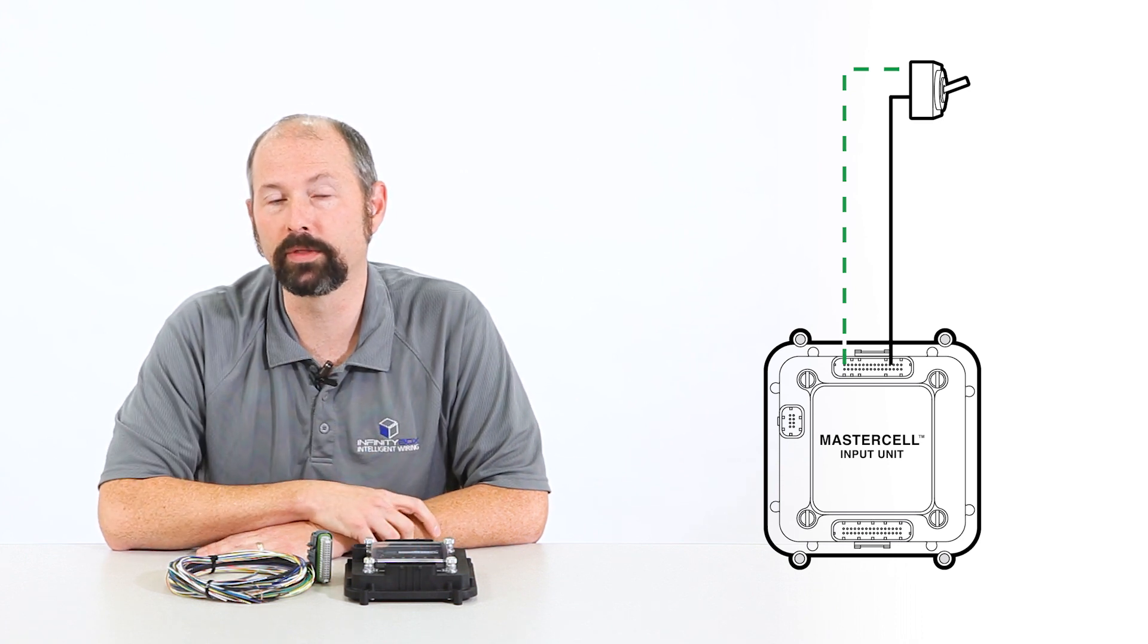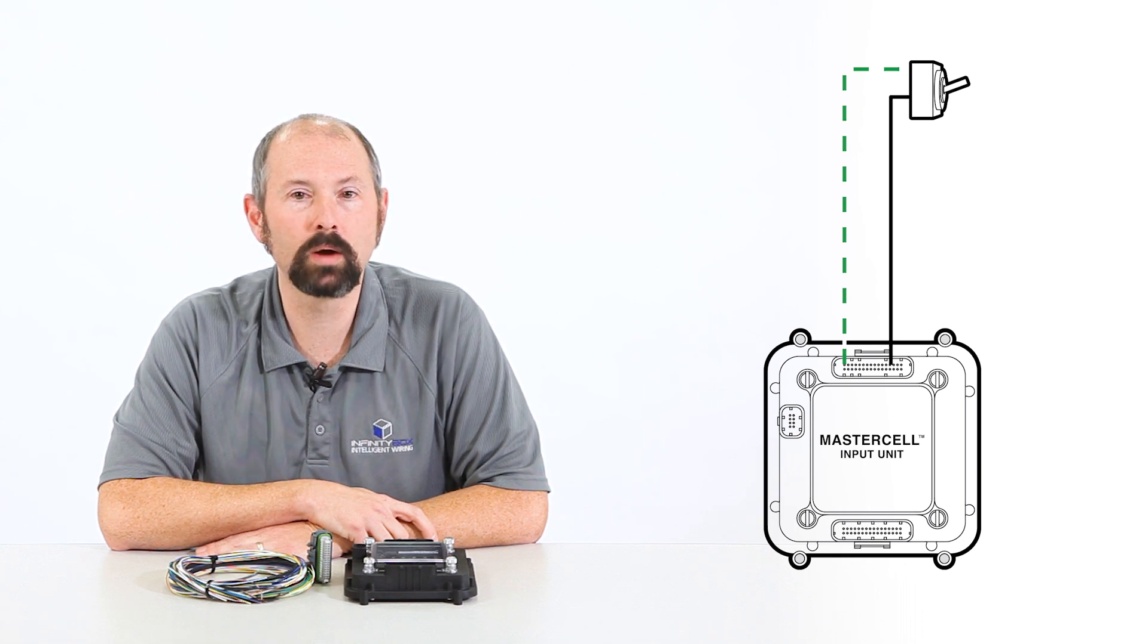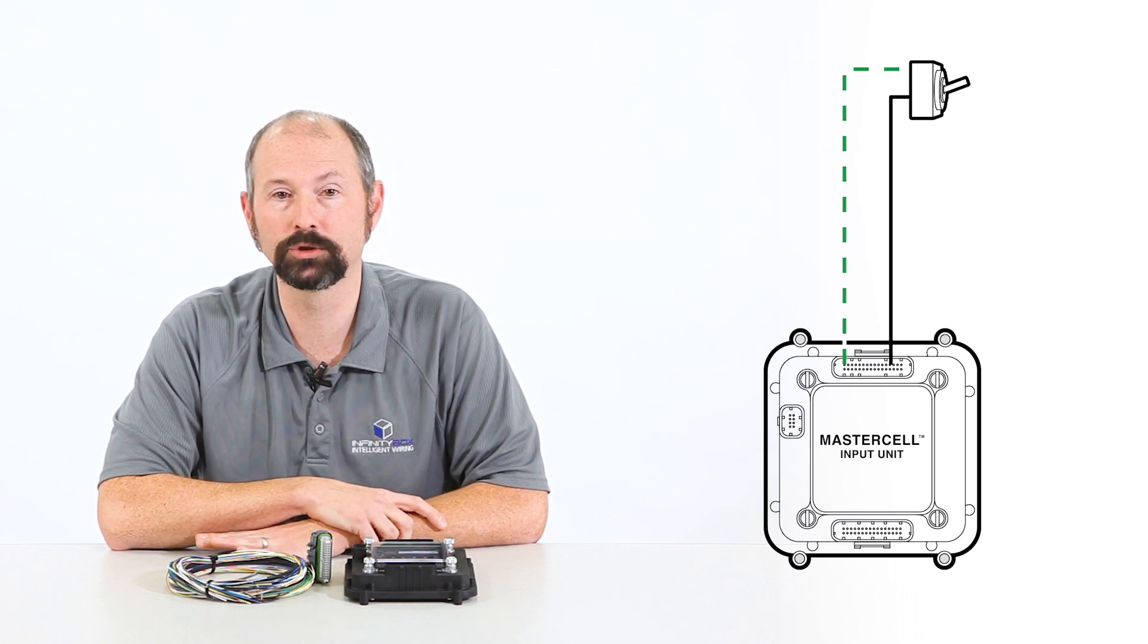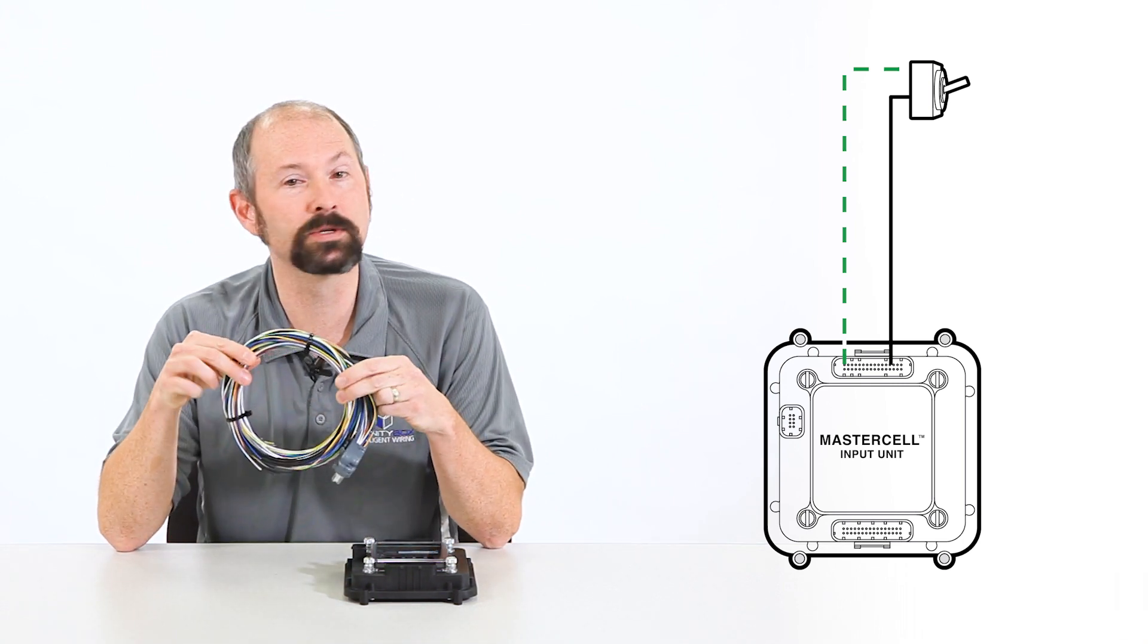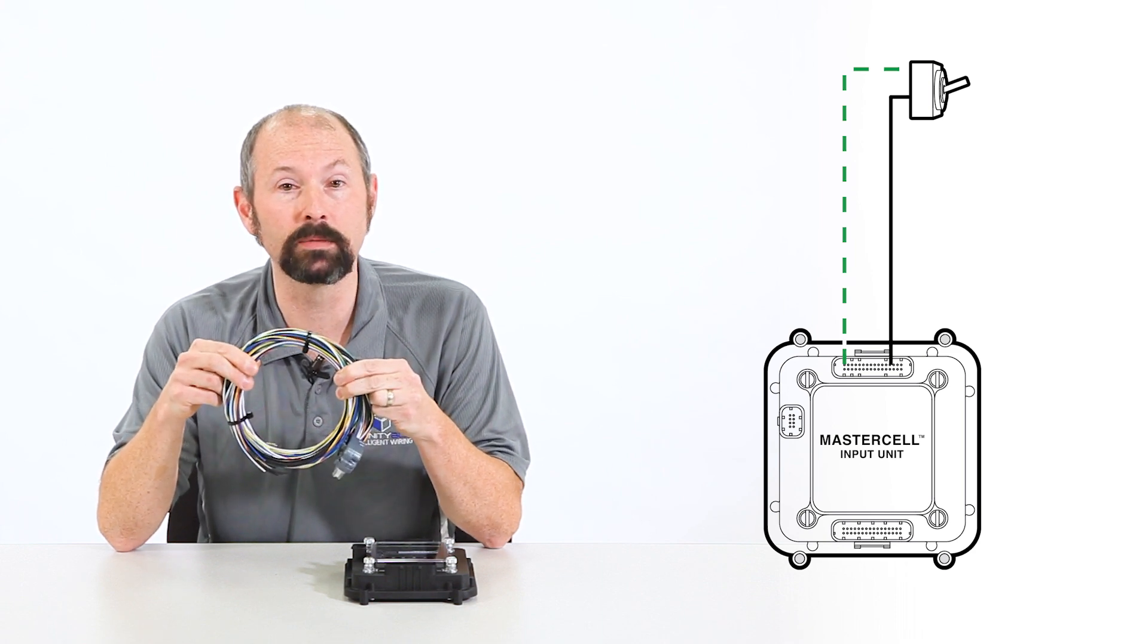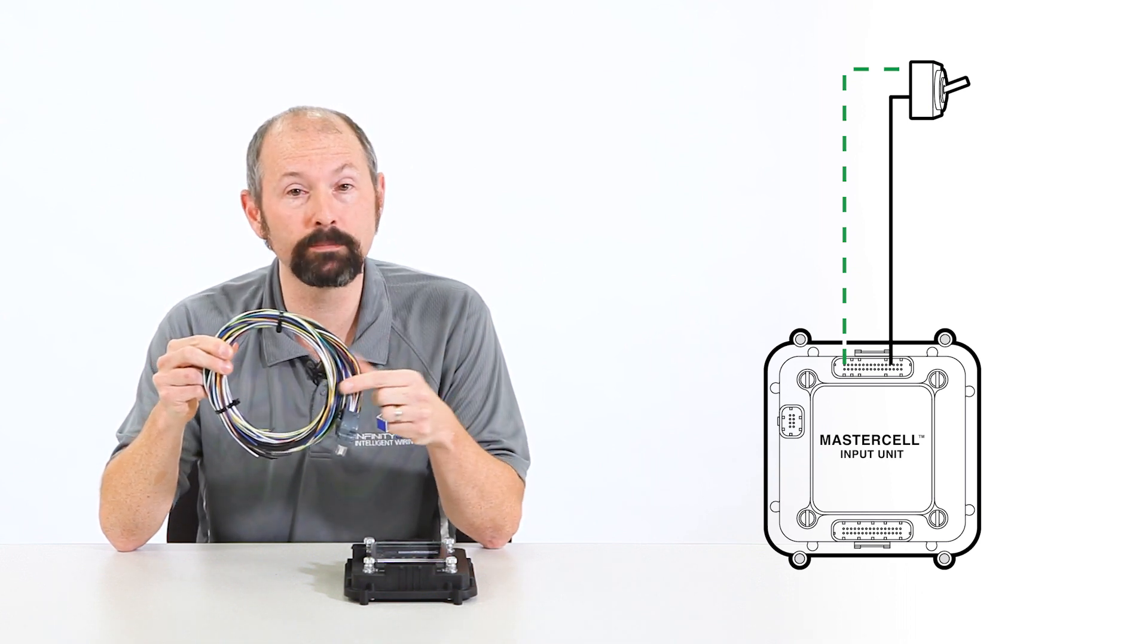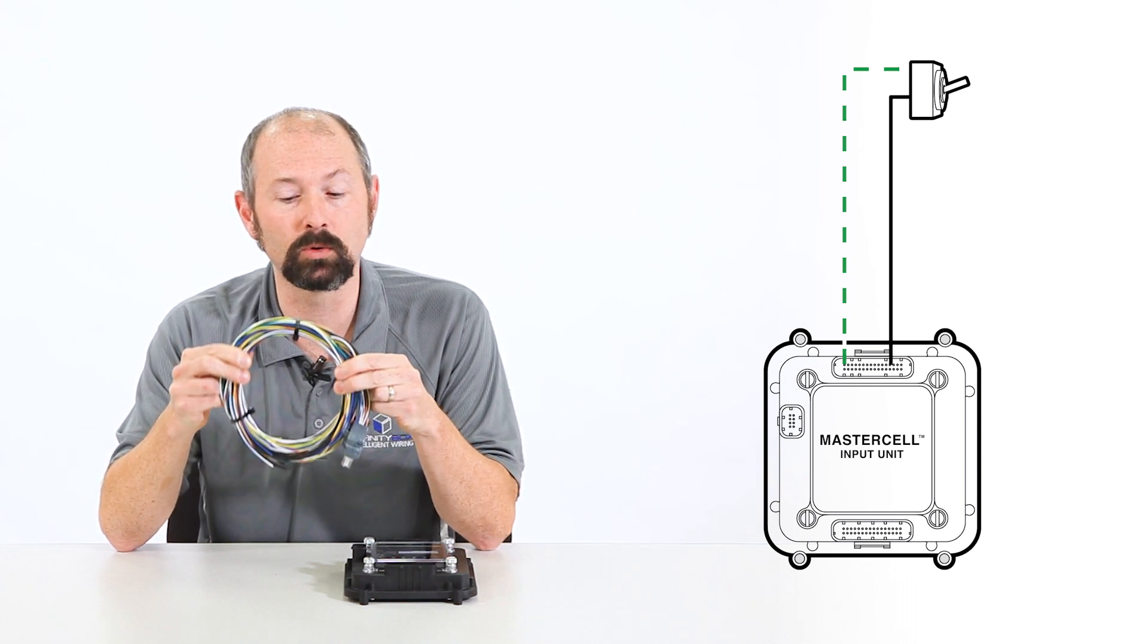And here are the really important things about this. First off, it takes about a milliamp of current, so that's one thousandth of an amp, to turn on a MasterCell input. So that means that there's absolutely no power at the switch. And that means that we can use a very light gauge of wire. And this is actually the MasterCell A input harness that comes with the kit. And this looks really complicated, but it's actually really simple when you get down to it. There's the mating connector that plugs into the MasterCell. They're the 24 inputs that connect the MasterCell. And there's eight ground wires that you can use as a reference.